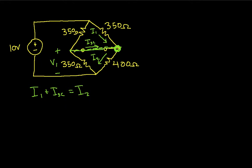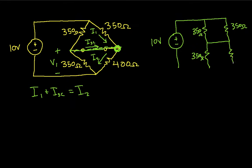So I can redraw this circuit to make it clear what I want to do as follows. I have 10 volts and I have then a 350 ohm resistor, another 350 ohm resistor, these guys are connected, 350 ohms, 400 ohms, and these guys are connected. So what I'm going to do is I'm going to take this resistor and this resistor, put them in parallel and get an equivalent resistance. I'll then take this resistor and this resistor, put those in parallel and get an equivalent resistance. And from that I'll have a voltage divider, which gives me V1.